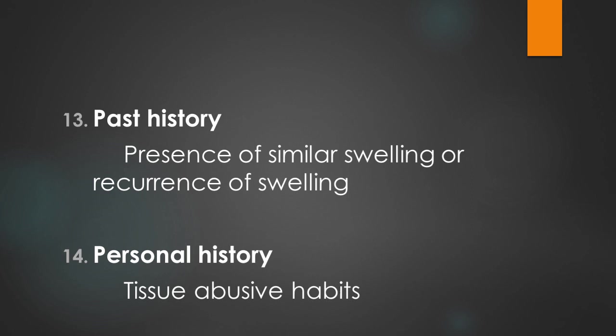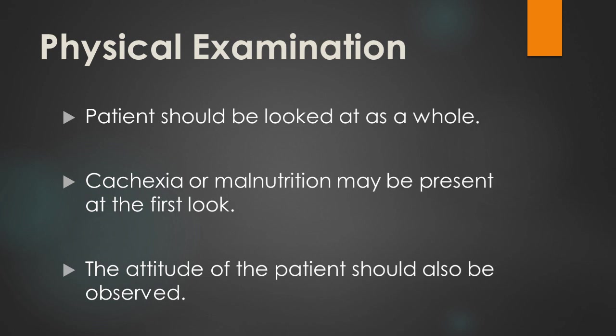In personal history, any tissue abusive habit such as betel leaf, lime, or tobacco is asked. Coming to the physical examination, the patient should be looked at as a whole. Cachexia or malnutrition may be present at first look. The attitude of the patient should be observed, as weakness of the body may be due to severe illness. Abnormal attitude may be seen in malignant conditions due to impingement of nerves.